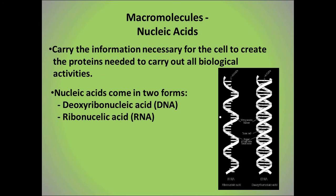DNA is created from long chains of subunits called nucleotides. Each nucleotide is composed of a deoxyribose sugar — that five-carbon sugar mentioned earlier — a phosphate group, and a nitrogen base. RNA converts the information from the DNA into the correct sequences needed to make the proteins that the body will use. RNA is also composed of nucleotides; the difference is it has the ribose sugar.